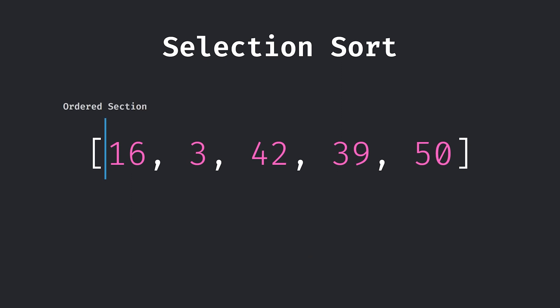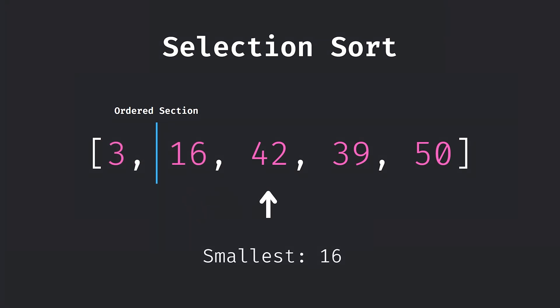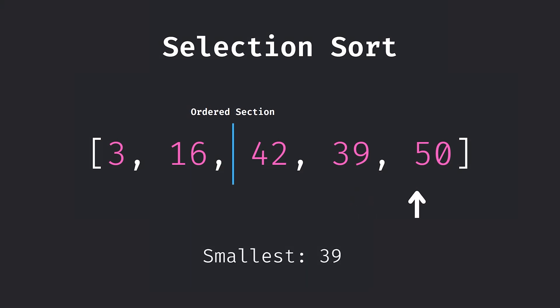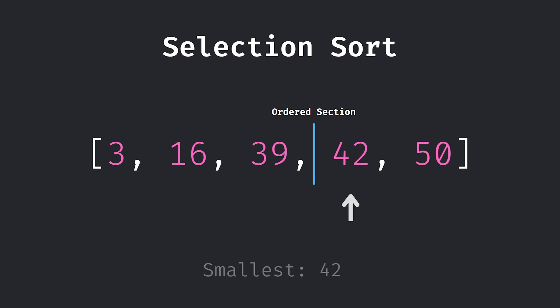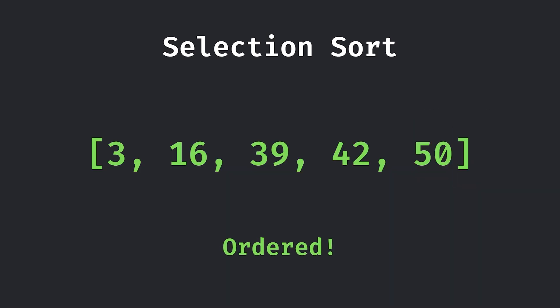Next we have selection sort, which is a bit more sophisticated. It's about keeping the start of an array or data set always ordered. At the very beginning there's nothing in the ordered section. You look through your data set, find the smallest value, take that value and push it to the front, and repeat until the unordered set has a length of zero. This always works because the smallest value in the unordered part will always be the largest value in the ordered section, so you can push it to the front and know it will always be safe.